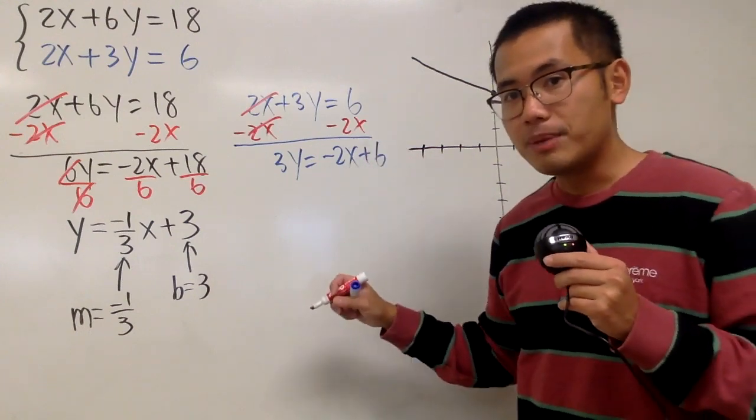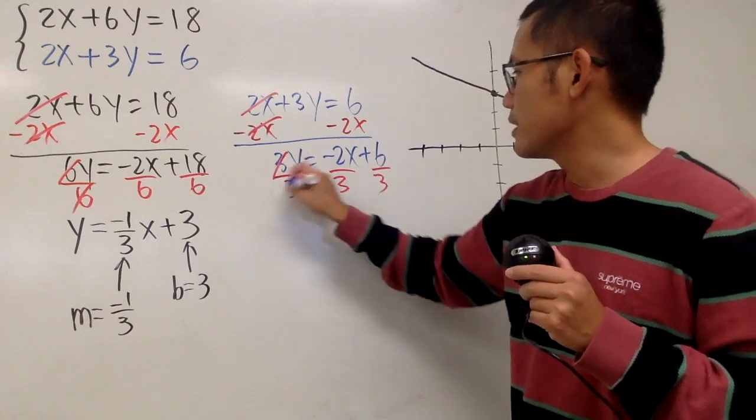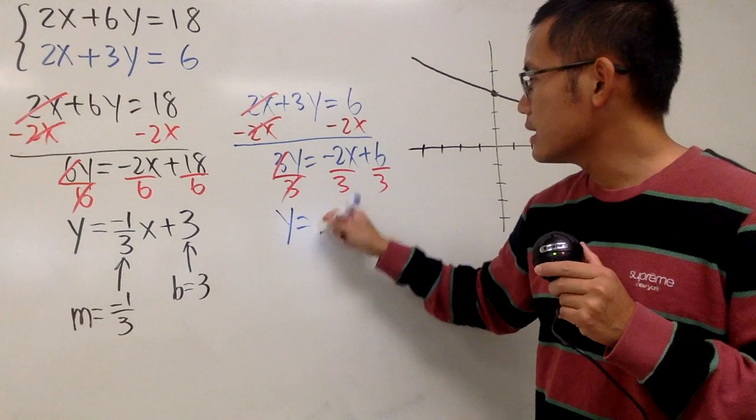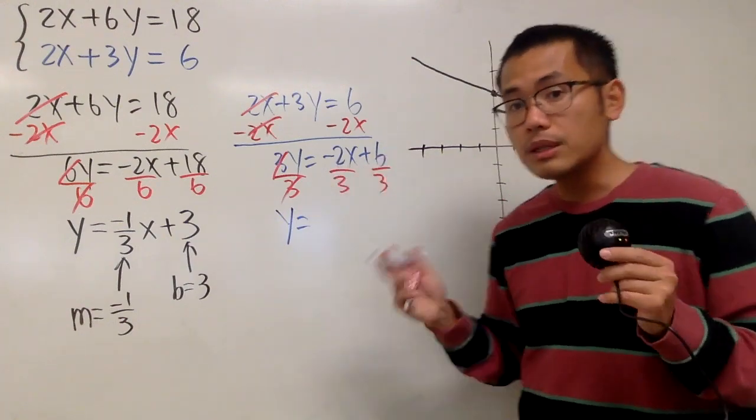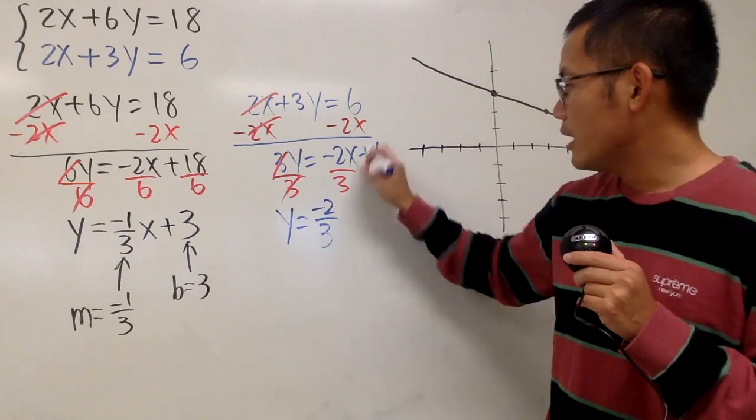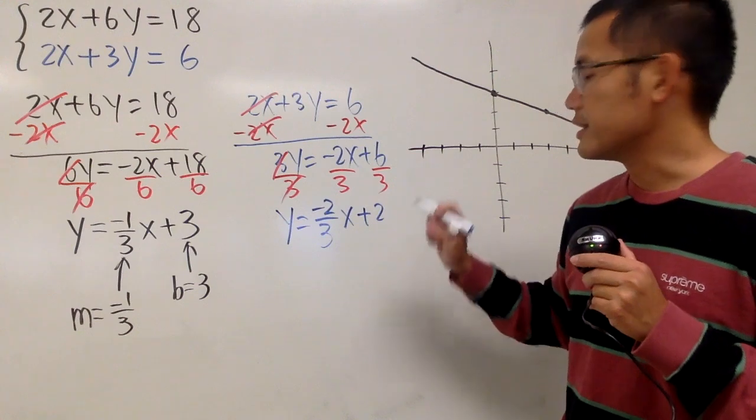And then we see this is 3y equals negative 2x plus 6. And I will have to divide everybody by 3. Divide this by 3. Divide that by 3. Divide that by 3. Cancel, cancel. So that we end up with y equals this and that. Cannot reduce, but we already done as negative 2 over 3. And put the x on the side. And 6 over 3, we get positive 2.